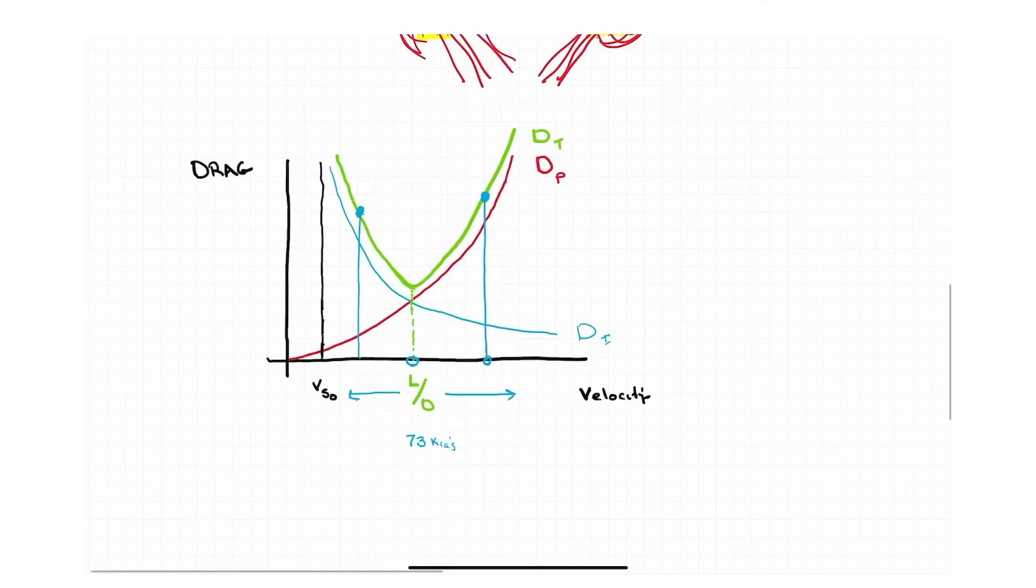Now, in the middle of this right here, this line here is again our best lift to drag ratio. And this right here is what we commonly refer to in this area: the front side of the power curve.